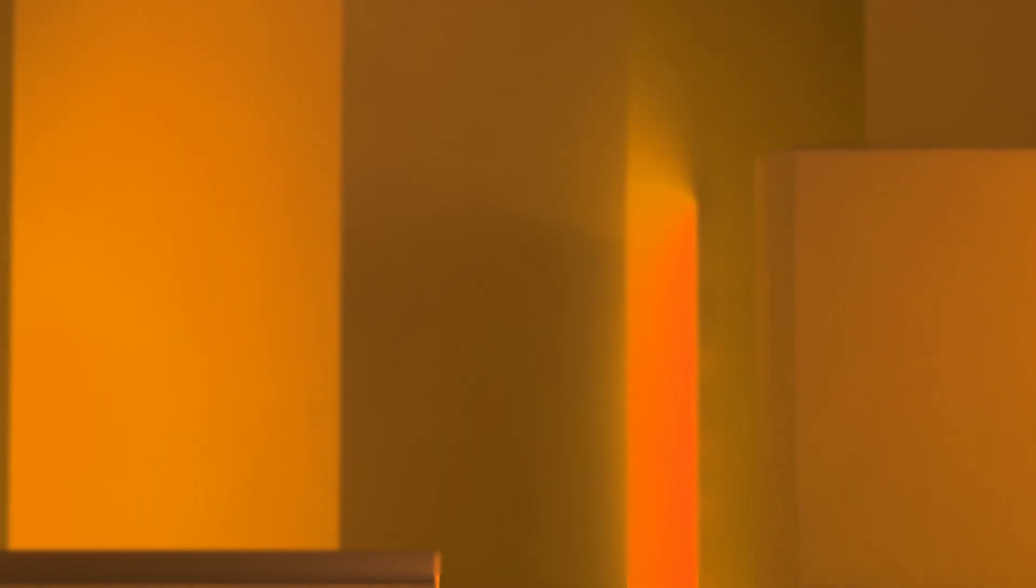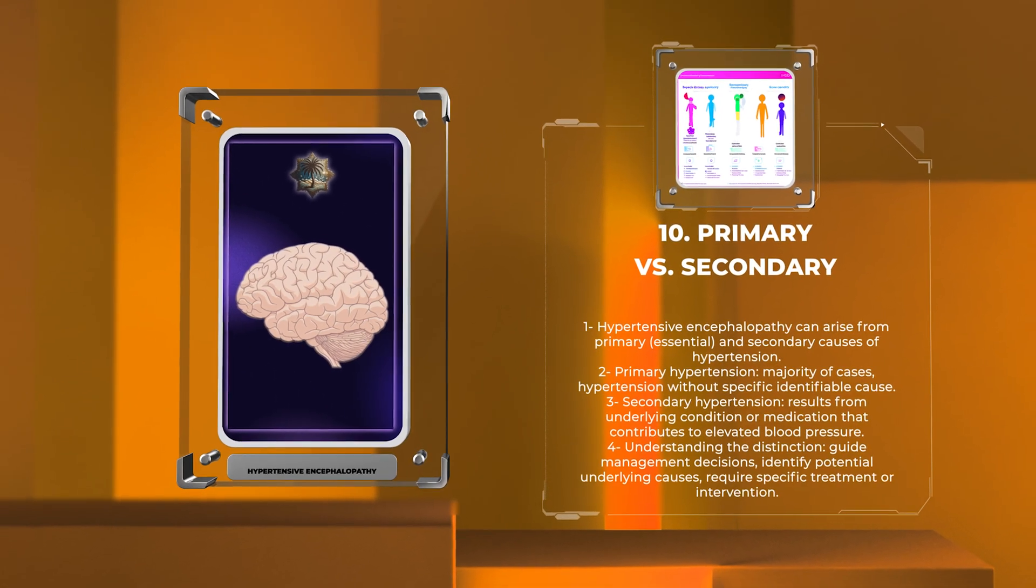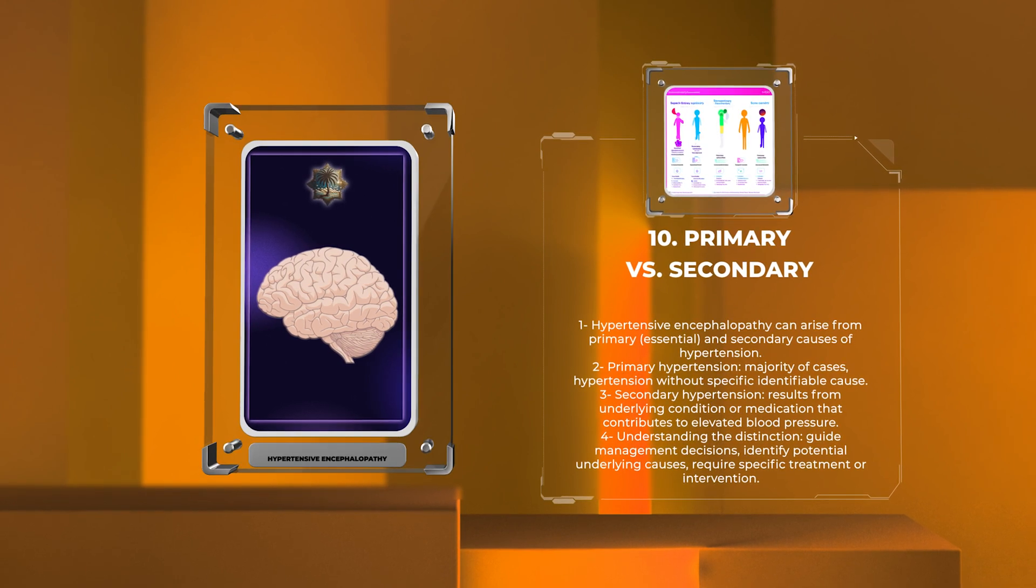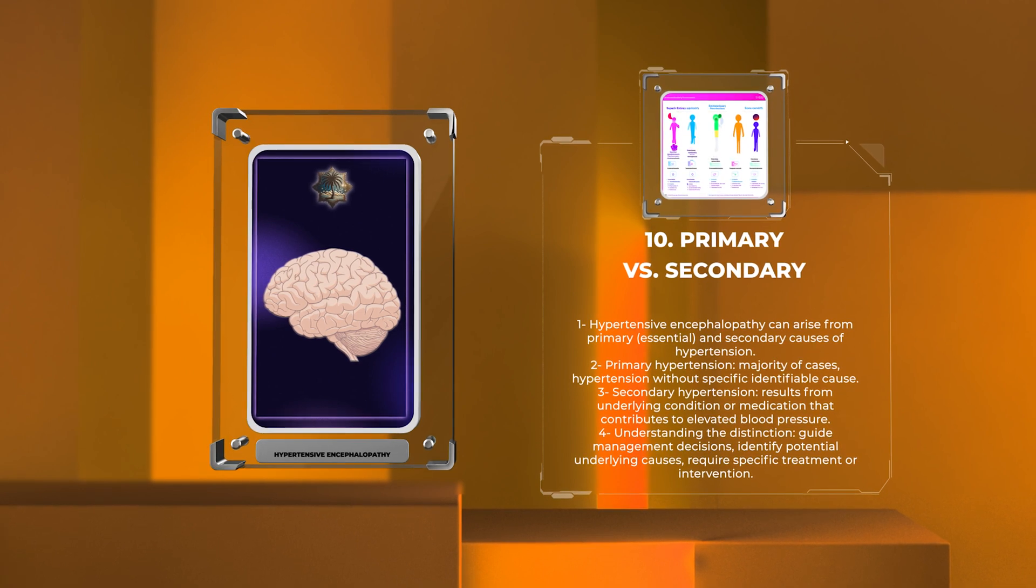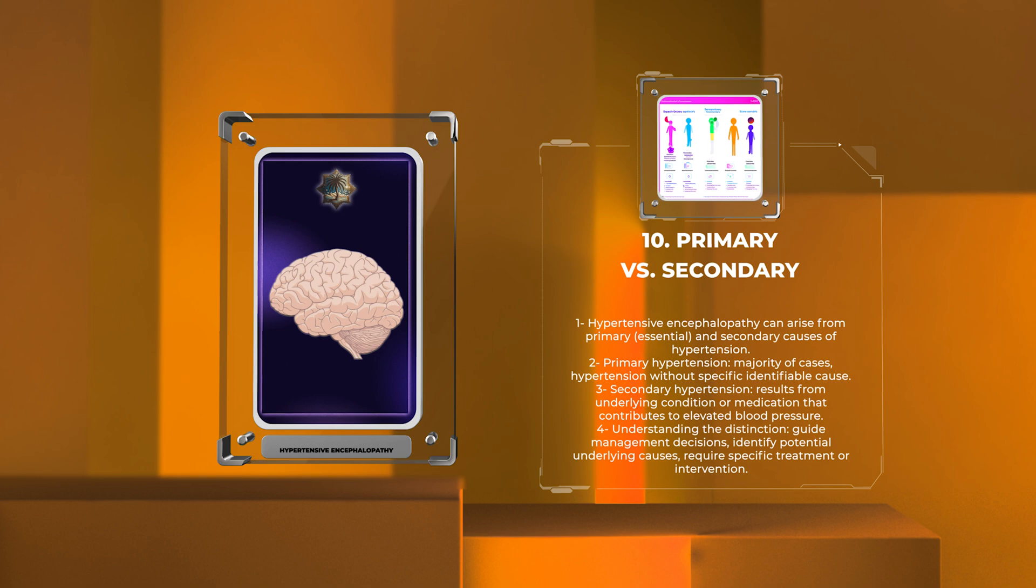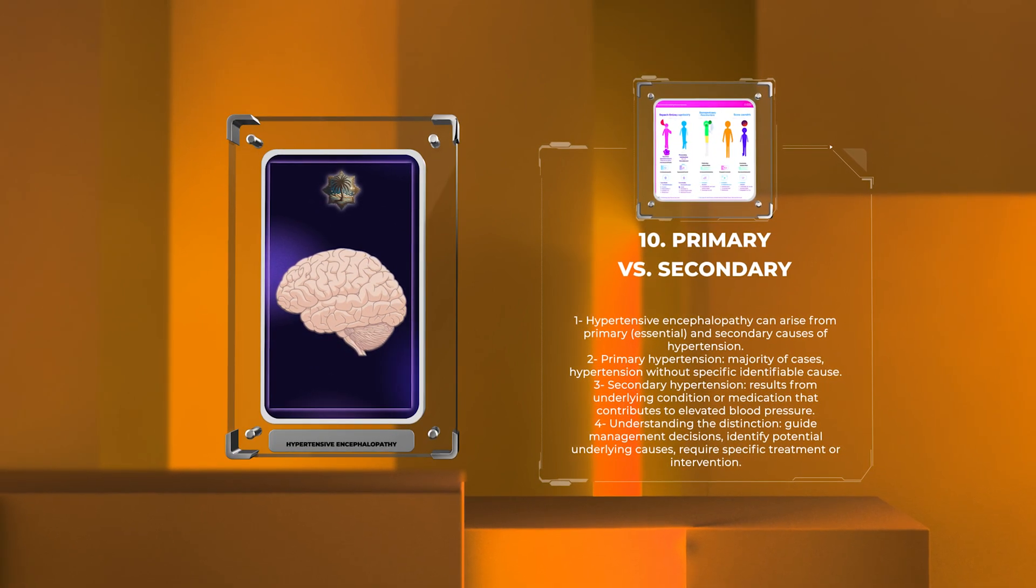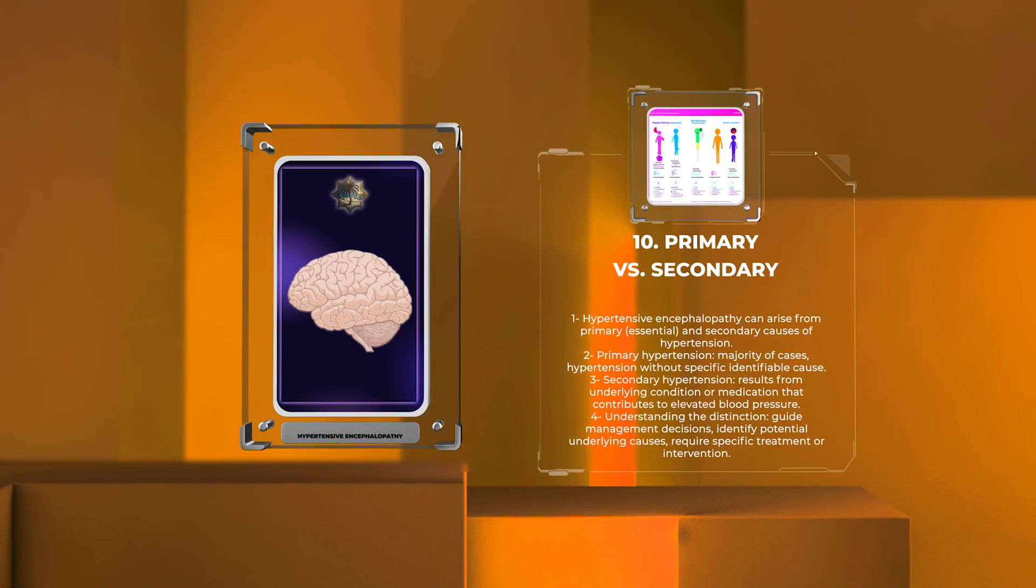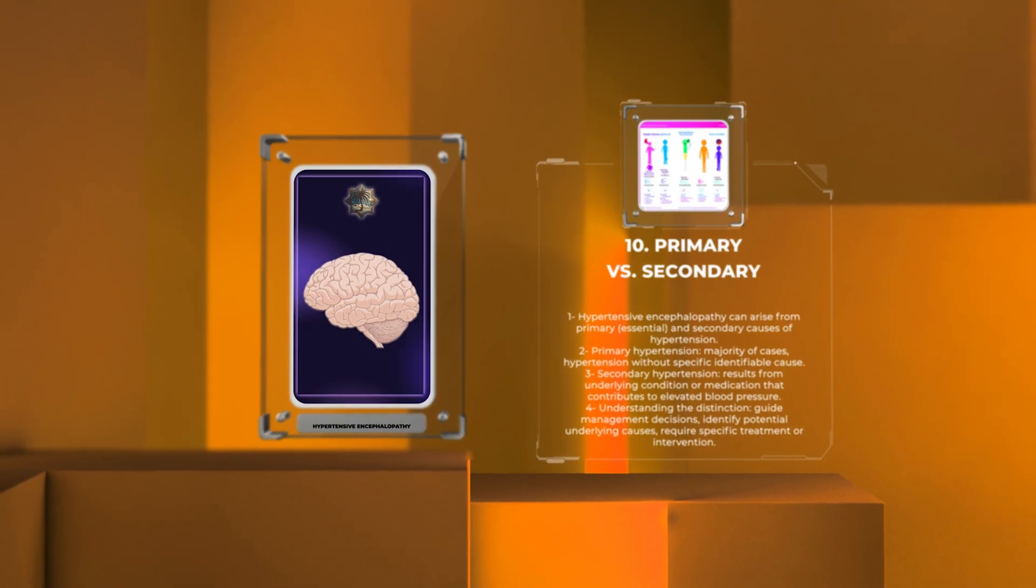Hypertensive encephalopathy can arise from both primary (essential) and secondary causes of hypertension. Primary hypertension refers to hypertension without a specific identifiable cause, accounting for the majority of cases. Secondary hypertension, on the other hand, results from an underlying condition or medication that contributes to the elevated blood pressure. Understanding the distinction between primary and secondary hypertension is essential in guiding management decisions and identifying potential underlying causes that may require specific treatment or intervention.